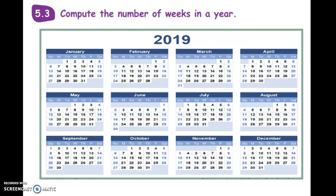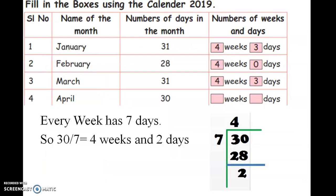Now let us see how to compute the number of weeks in a month and year. To calculate the number of weeks in a month, divide the total days of a month by 7. For example, April month has 30 days. 30 divided by 7 equals 4 weeks, 2 days.